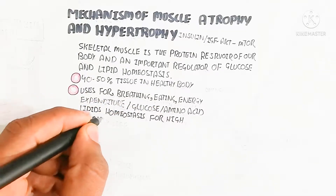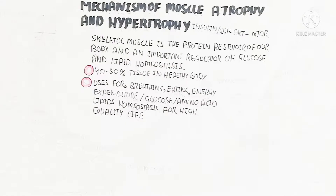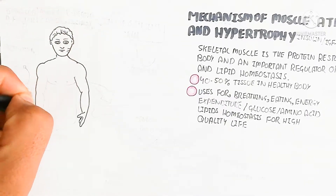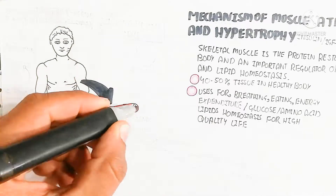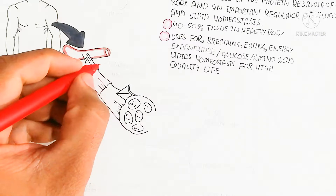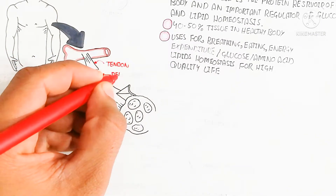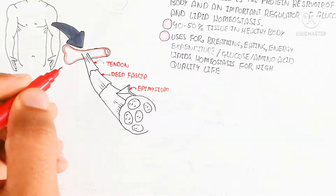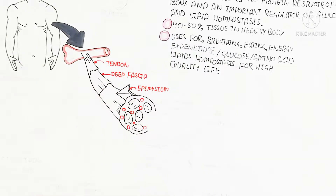We need to understand the anatomical aspect of the skeletal muscle. Skeletal muscle means the bones are attached with the muscle for movement, so it is under our voluntary control. Here is the bone which attaches to the tendon. The tendon is attached with the deep fascia, and the deep fascia is connected with and made up of epimysium, which contains the muscle.